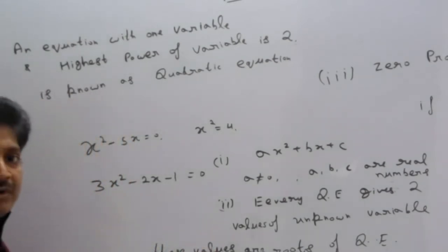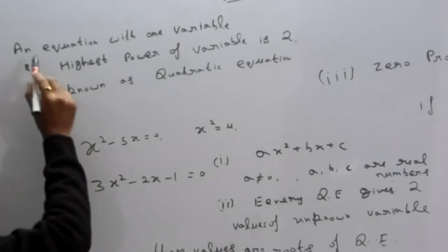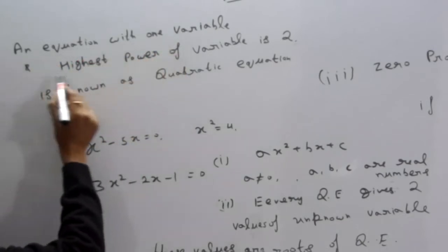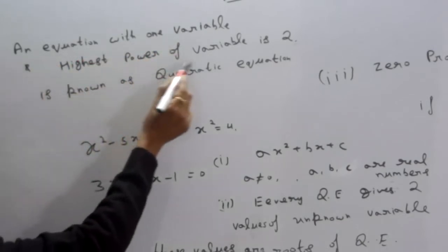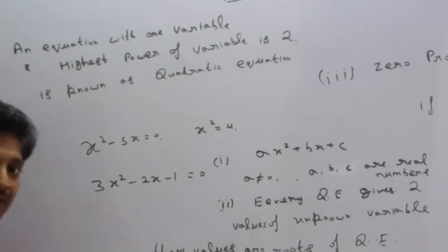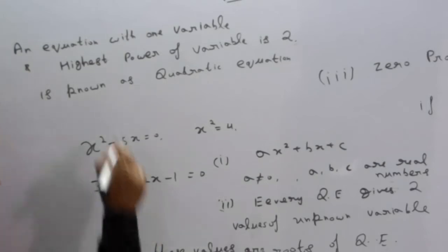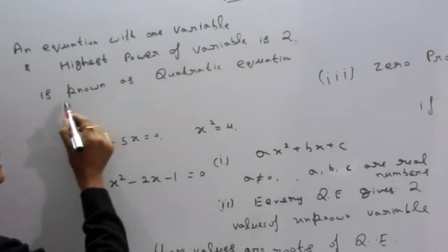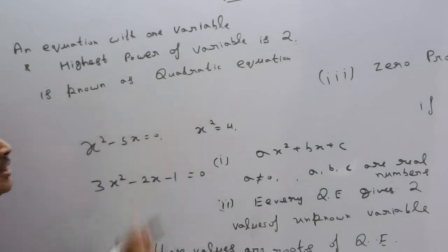What is the quadratic equation? Quadratic equation kya? An equation with one variable and highest power of the variable is 2. Ek equation jisme one variable, and highest power of variable is 2, is known as the quadratic equation.